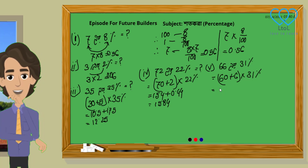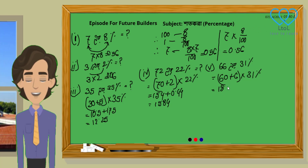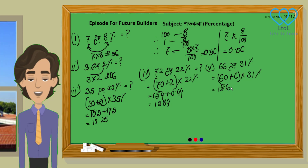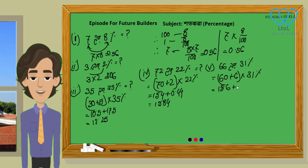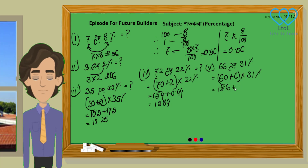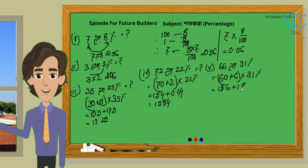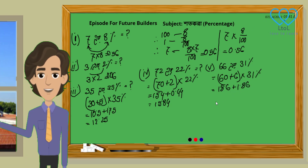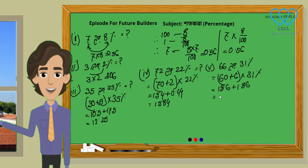We have to say that is 1,860. 1,860. That means 1 is 6. 80.6 plus 31 is 6. That is 1,860. Now we have to say that is 2,860. That is the answer.